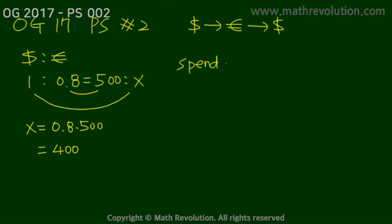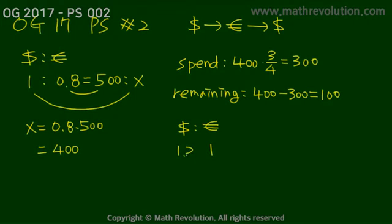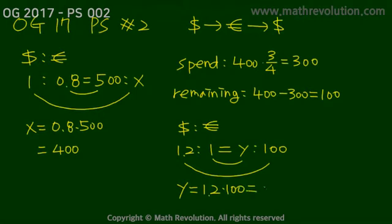We spent three-fourths of the 400 euros, so the amount spent is 400 times 3/4, which is 300 euros. The remaining amount is 400 minus 300, which equals 100 euros. Now converting back to dollars at the new rate: for each euro we get 1.2 dollars. So y equals 1.2 times 100, which is 120 dollars. Choice D is our answer.